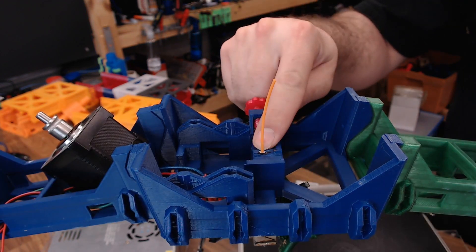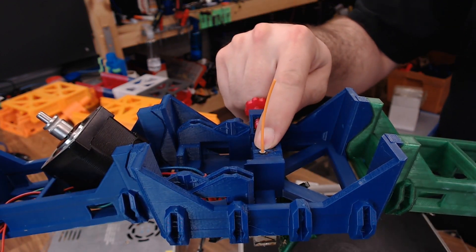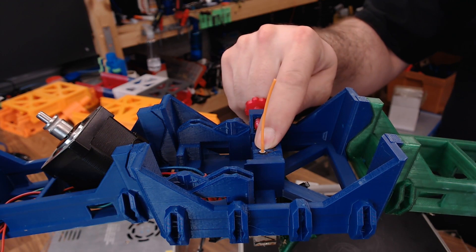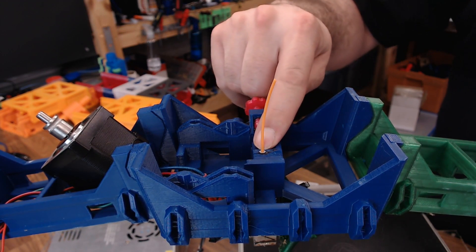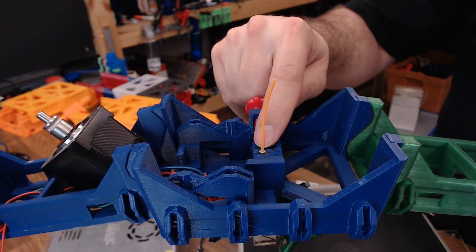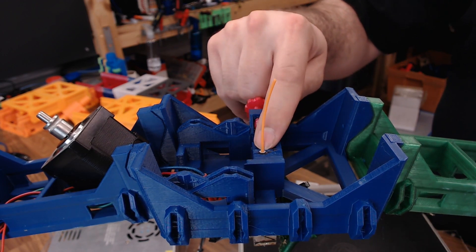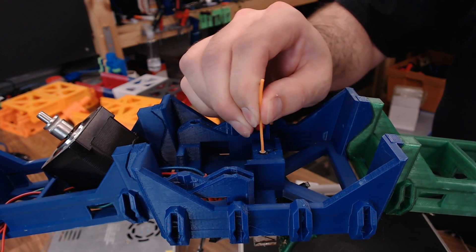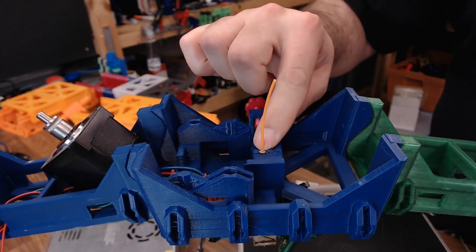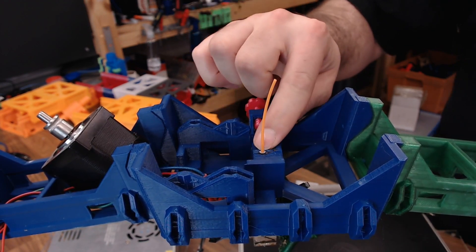So the first thing I did was drill out where the filament path goes. This is a genuine E3D V6, but it still has a PTFE tube that goes into the top portion of the barrel to help guide the filament. So I drilled this hole out so I could press fit that PTFE tube so it wouldn't be able to jump up and down. And that should make consistent extrusion a lot easier.